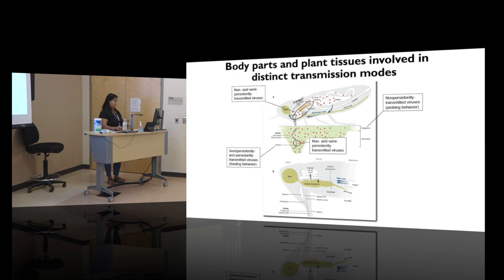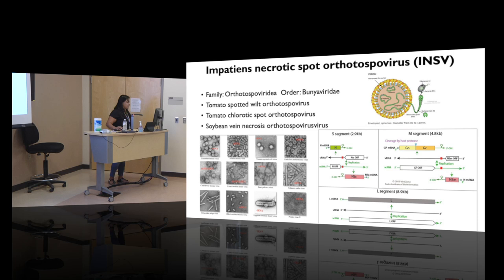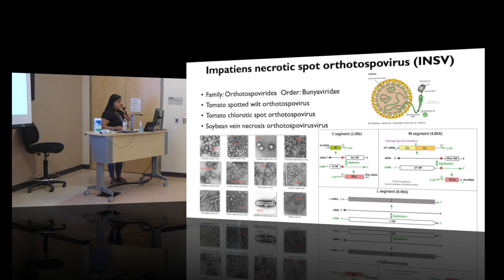Impatiens necrotic spot virus — or more precisely, Impatiens necrotic spot orthotospovirus. Virus names in plant virology keep changing all the time. In fact, one manuscript was submitted and by the time it was accepted, the virus name had changed three times. Plant viruses are relatively new in research terms, and every time new information emerges, reclassification follows. Taxonomy in plant virology changes especially frequently.